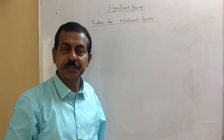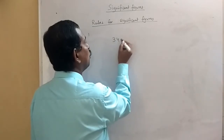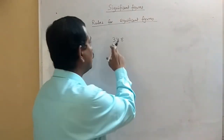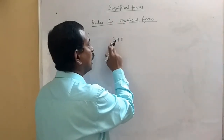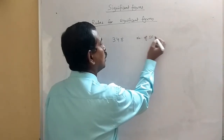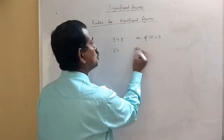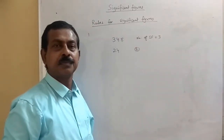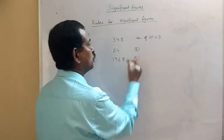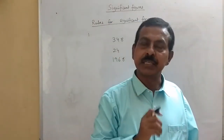All non-zero digits are significant. For example, if we take 3, 4, 8 — we have used 3 digits and they are all non-zero, so the number of significant figures is 3. If it is 24, then it is 2. If it is 1, 9, 6, 8, it is 4. So all non-zero digits are significant.